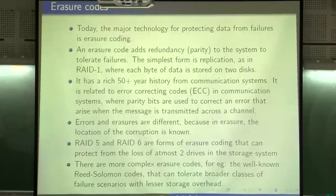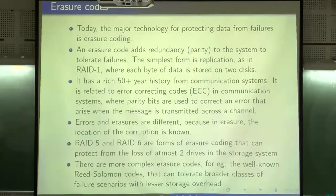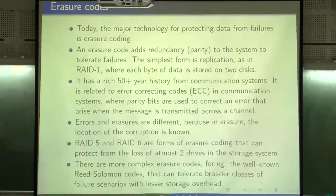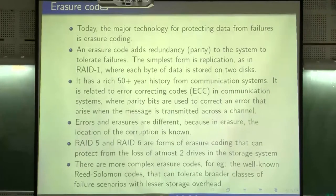Now let us come back to erasure codes. So far in coding theory we have been talking about errors occurring, but we have not specified what kind of erasure is. Erasure codes are a major technology protecting data from failures. Erasure coding adds redundancy or parity to provide system tolerance — the simplest form is replication, as in RAID 1, where each byte of data is stored in two disks. This has about a 50-year history from communication systems. Errors and erasures are different: in erasure, the location of the corruption is known.